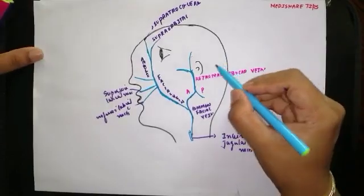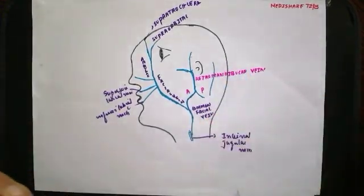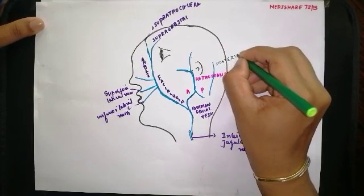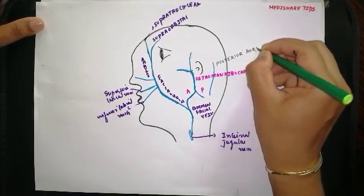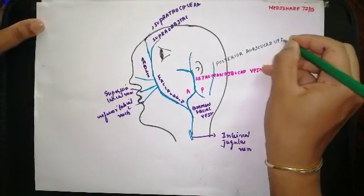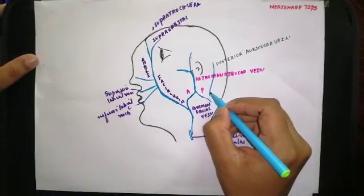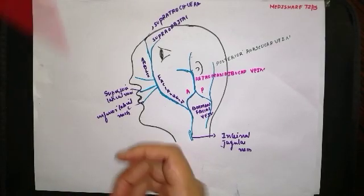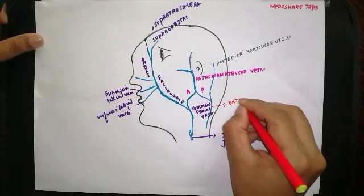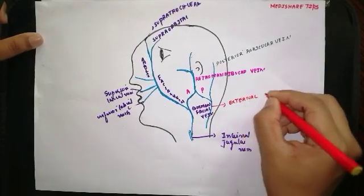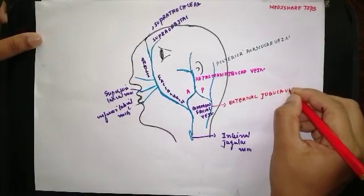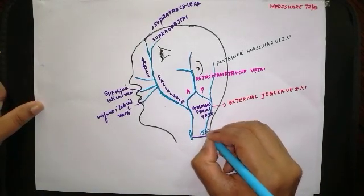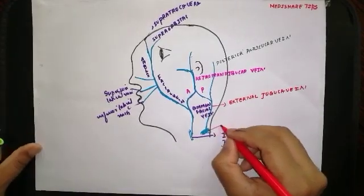There is another vein present behind the auricle — the posterior auricular vein. The posterior division of the retromandibular vein joins the posterior auricular vein to form the external jugular vein, which drains into the subclavian vein.